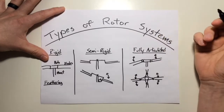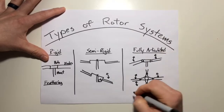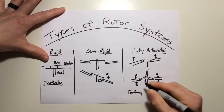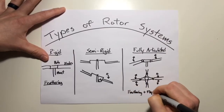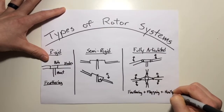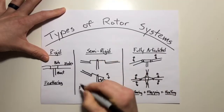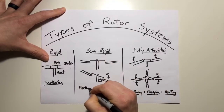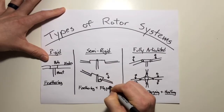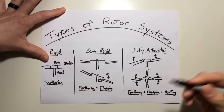This system increased the reliability and blade life, and allowed feathering plus flapping plus hunting. The semi-rigid allows for feathering plus flapping. As you can see, each system adds a little bit more capability. There have been upgrades to all systems, and all three systems are still seen today.